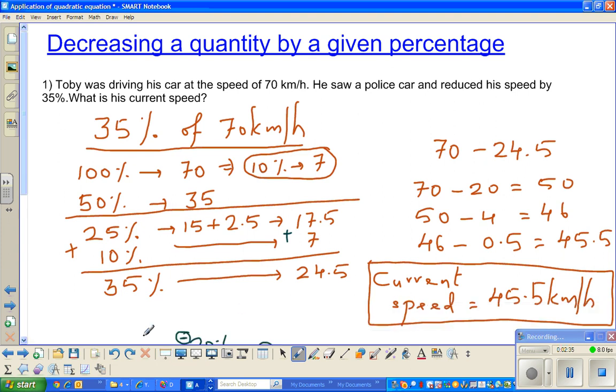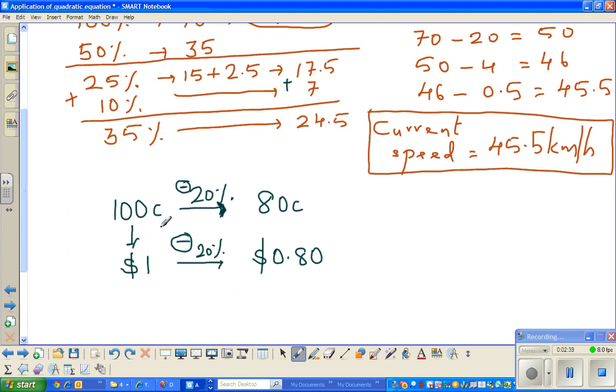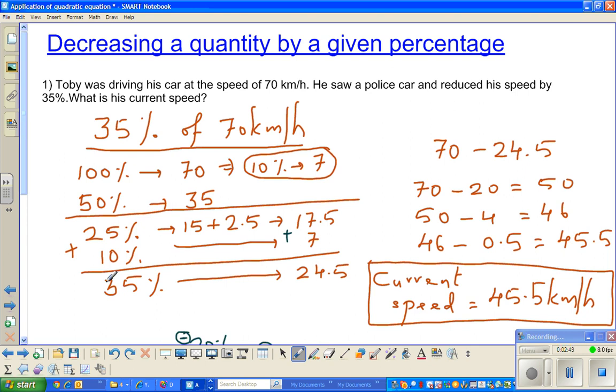This is the intuition. I'm going to show you how to do this in one step. What we have done is we have done it in two steps. That means we first found the 35% and then we took it away. This is fine for this type of example where you have a given quantity and then you want to reduce it by a given quantity.